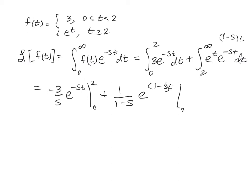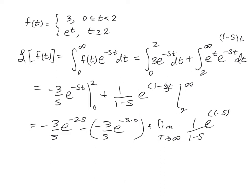And that's now from 2 to infinity. So that's going to be negative 3 over s e to the negative 2s minus negative 3 over s e to the negative s times 0. And then back here, it's going to be the limit as t goes to infinity of 1 over 1 minus s e to the 1 minus s times 0.